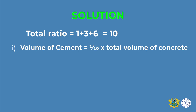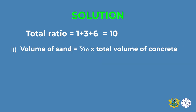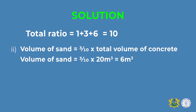First, look at the total ratio: 1 + 3 + 6 = 10. Volume of cement: 1/10 × 20 m³ = 2 cubic meters. So 2 cubic meters of cement is found within the concrete mixture. Volume of sand: the ratio for sand is 3, so we divide 3 by 10 and multiply by 20 m³, giving an answer of 6 cubic meters.